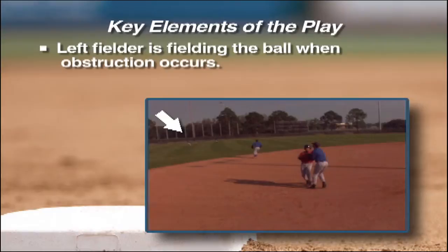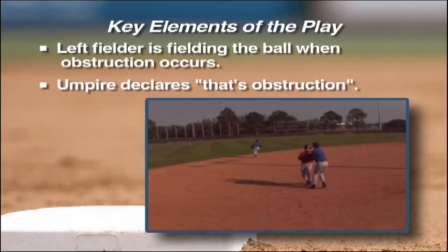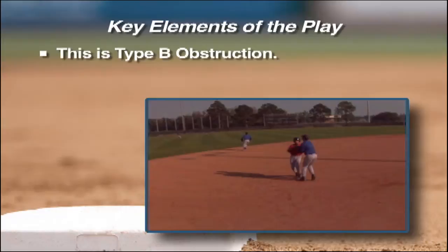At this point in the play the umpire shall verbally declare, "that's obstruction" while pointing at it with the index finger of his right hand. The ball remains alive and in play. This is type B obstruction and the award to each base runner is based on the umpire's judgment.